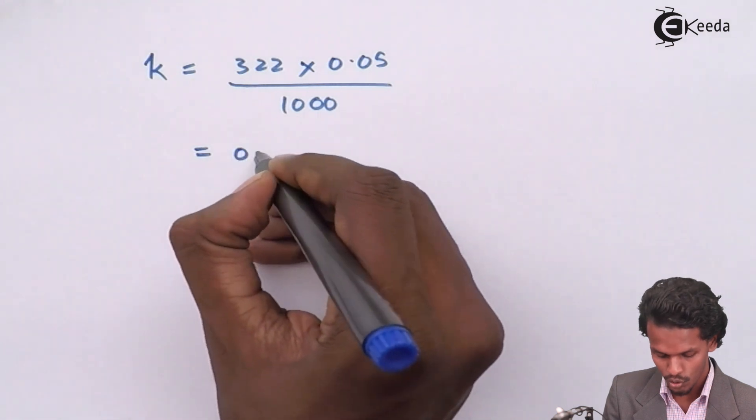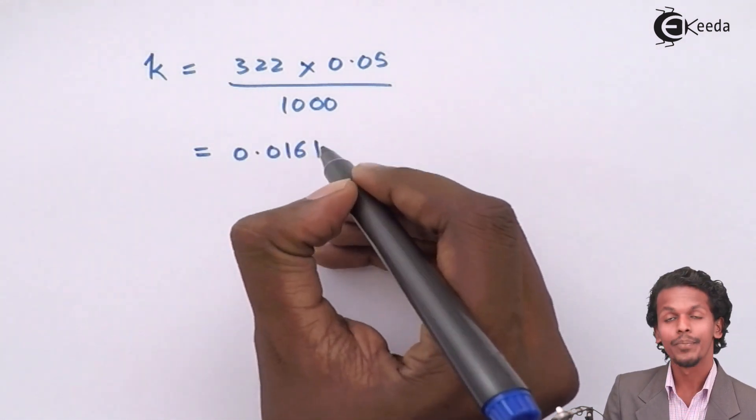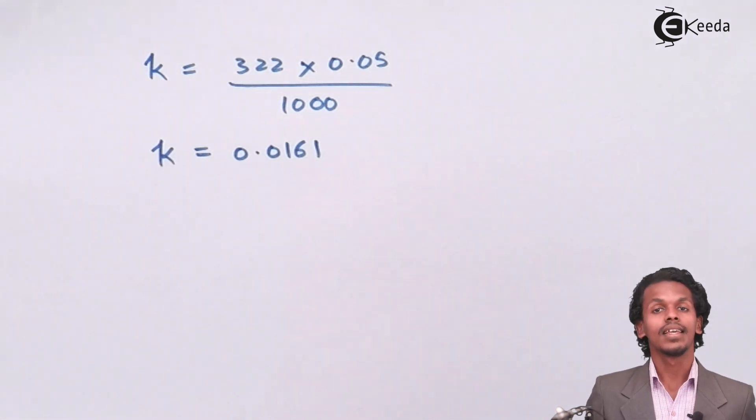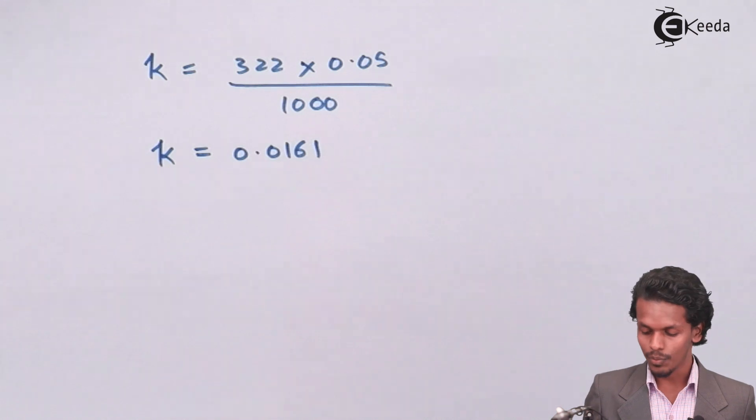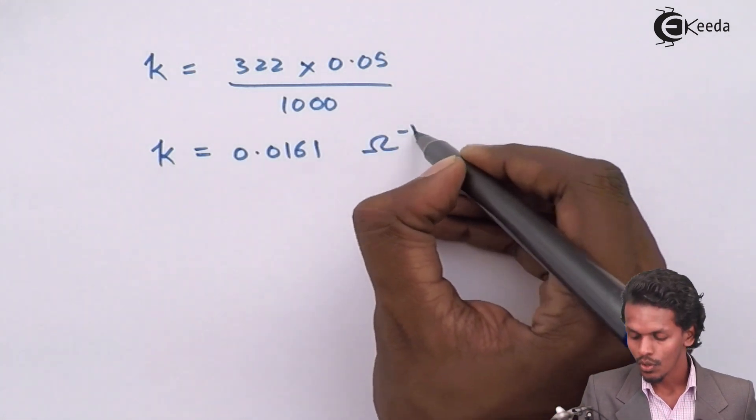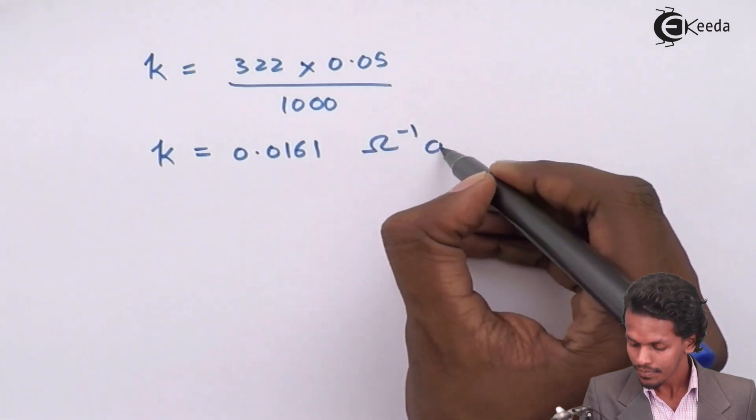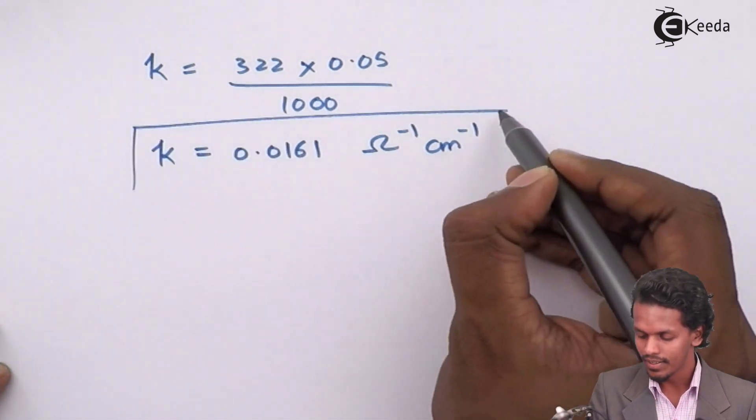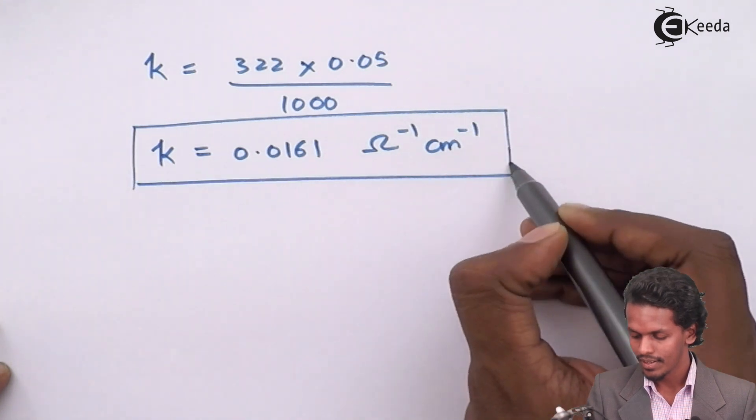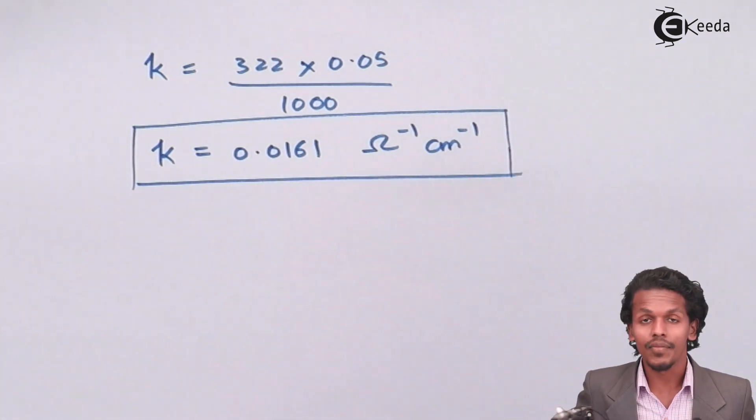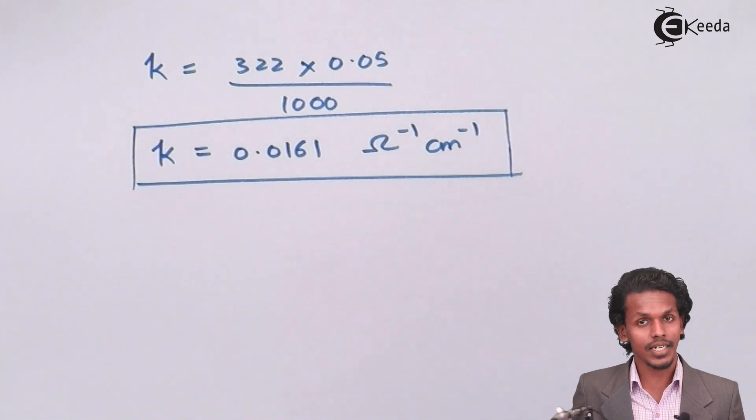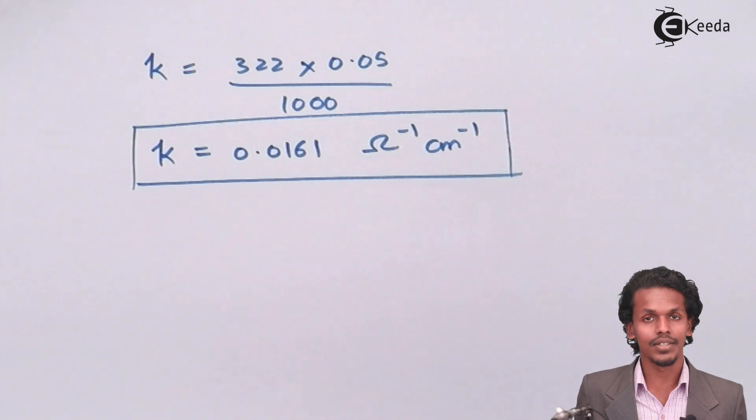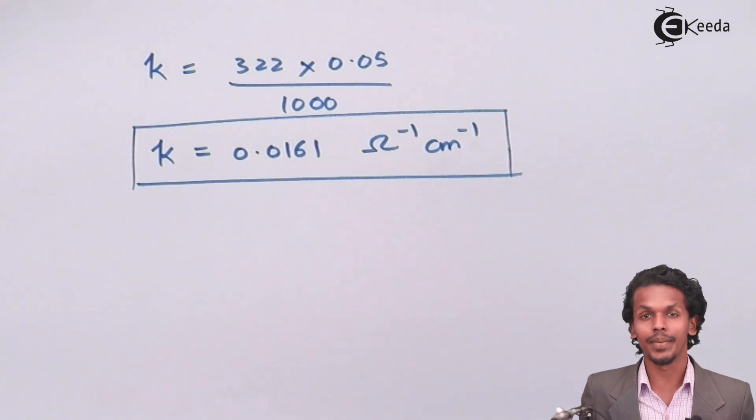We have got a value of 0.0161 for conductivity. The unit would be ohm inverse centimeter inverse. This is how we calculated the value of conductivity with the help of molar conductivity and the relation between them.